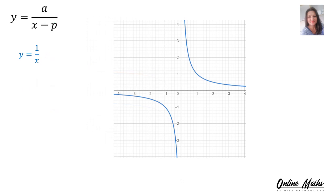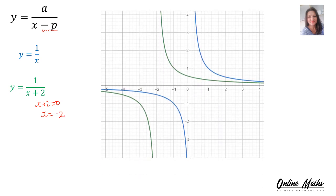Now I want to discuss the influence of the minus p under the line. For the standard graph y equals 1 over x, when the equation becomes y equals 1 over x plus 2, you take x plus 2, equate it to 0, and find x equals negative 2. Suddenly there's a vertical asymptote at x equals negative 2. So the minus p under the line results in your graph shifting either to the left or to the right.